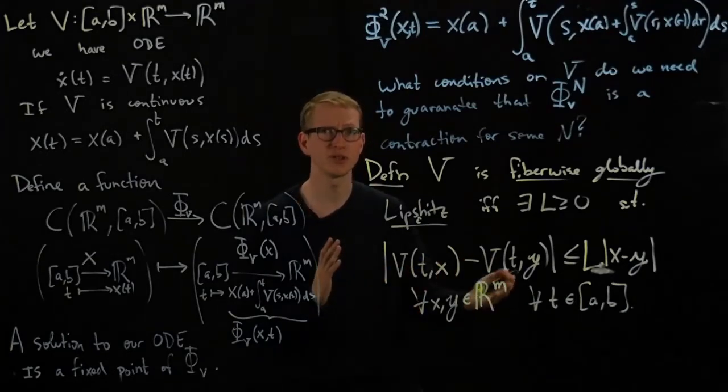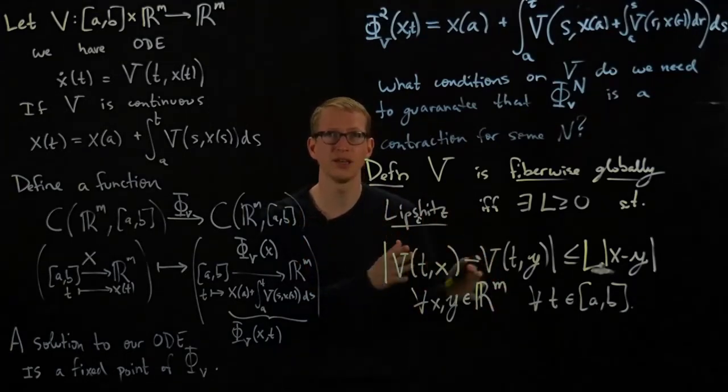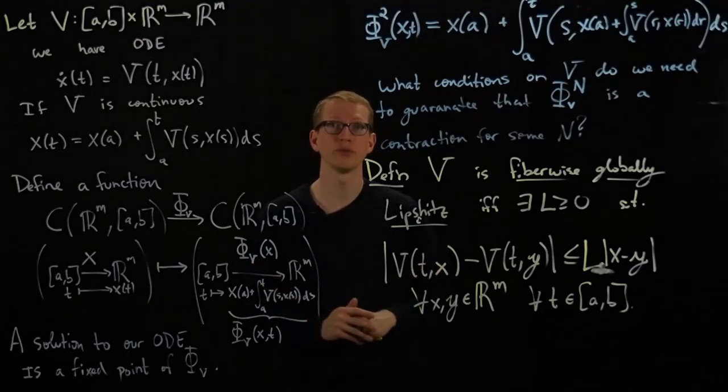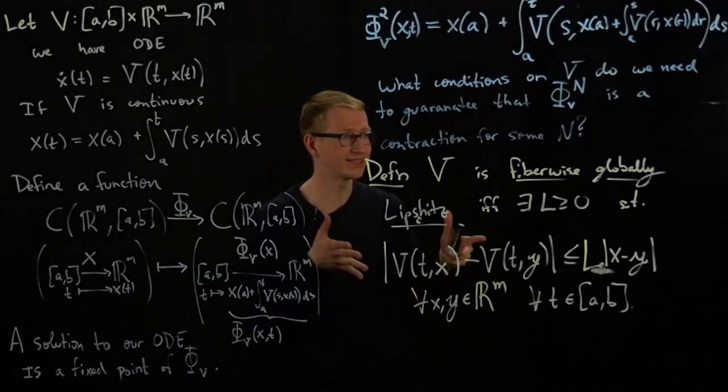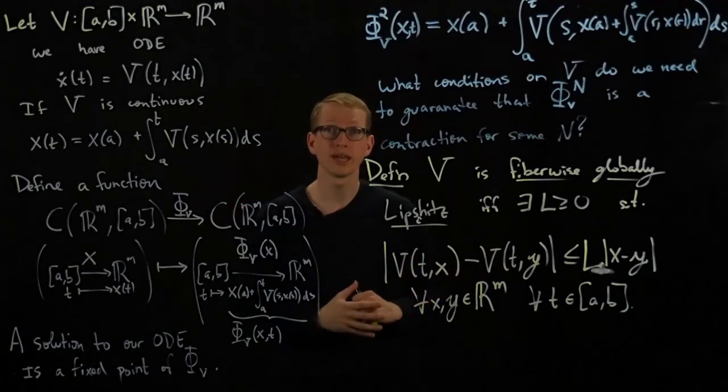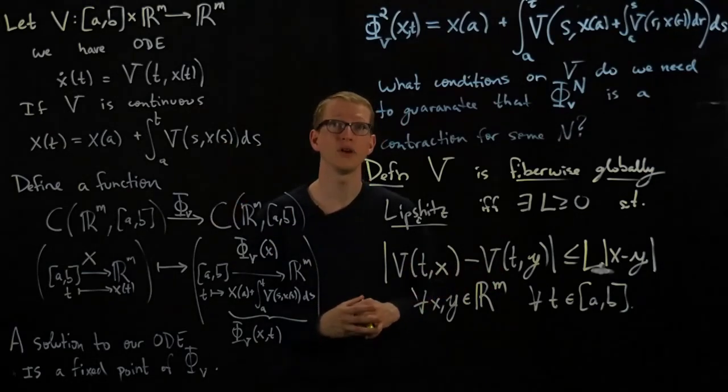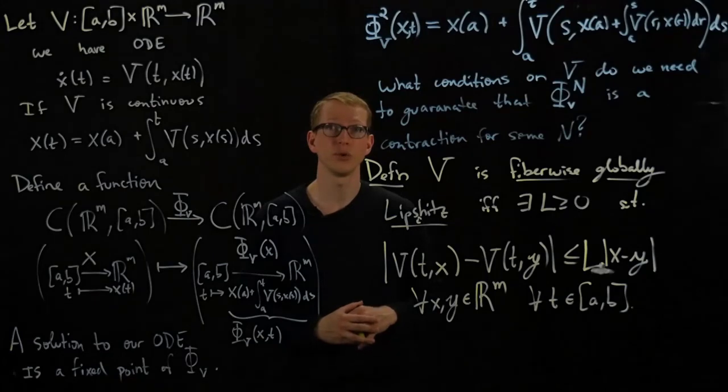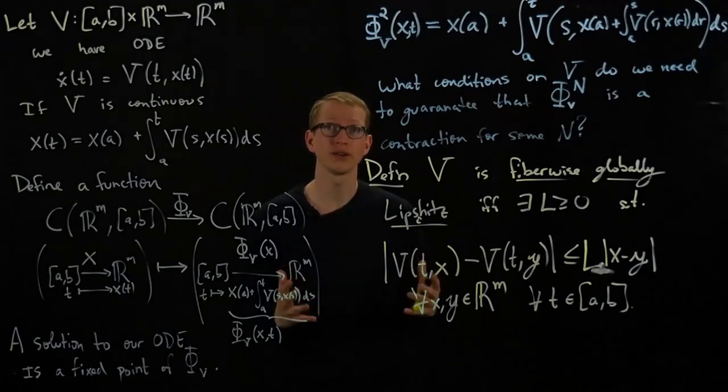So it's not exactly Lipschitz, it's not exactly Lipschitz for each t, it's sort of a combination of both of those conditions. And it's this condition here on a vector field V that will guarantee the existence of a solution to a differential equation and will also guarantee uniqueness.